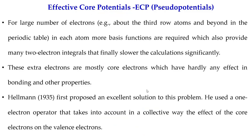We will now discuss the effective core potential. From chemical intuition, we know that for chemical reactions, only valence electrons are actually influencing the process, and core electrons mostly become inactive. For large numbers of electrons — when we consider third-row atoms and beyond in the periodic table — there are so many electrons, so many orbitals, and so many basis functions to consider, making calculation time extremely high.